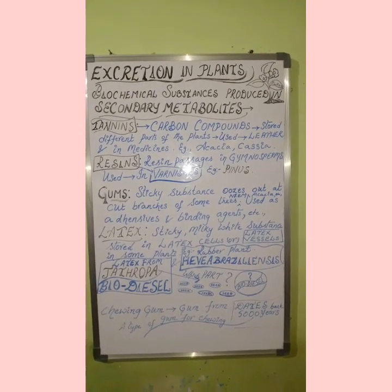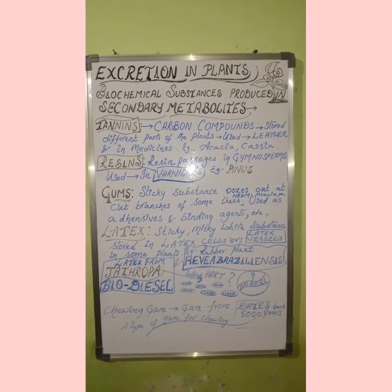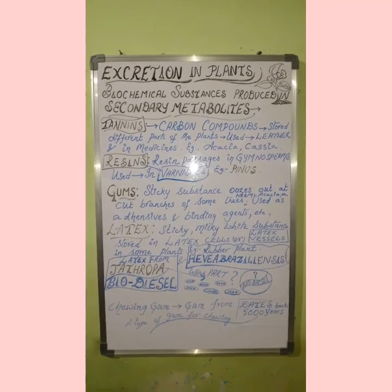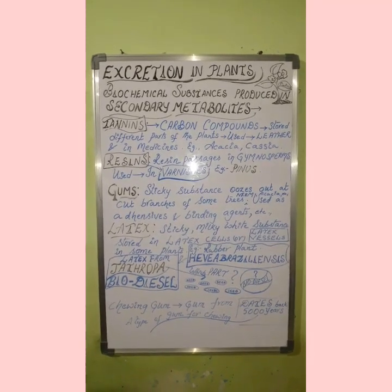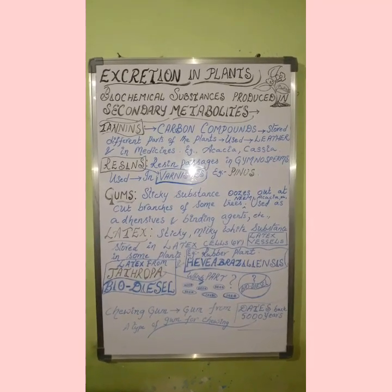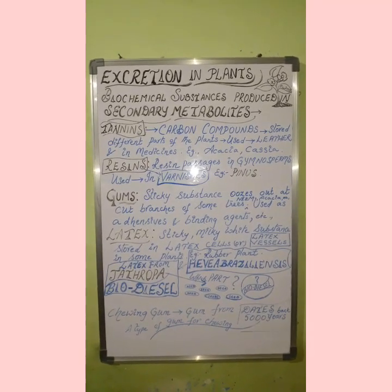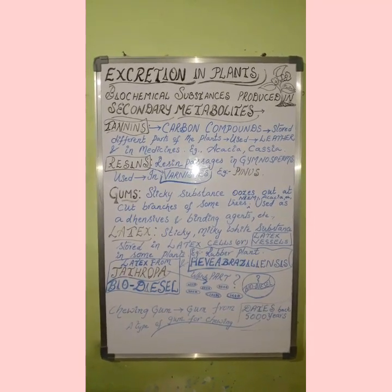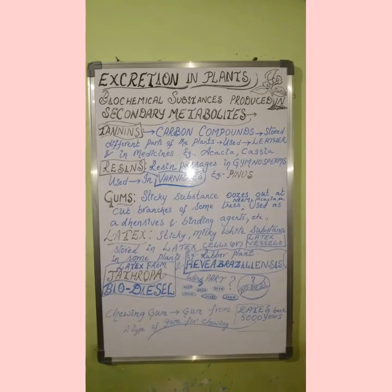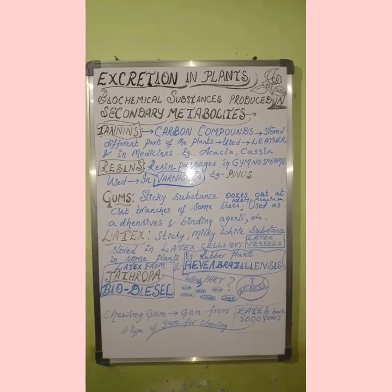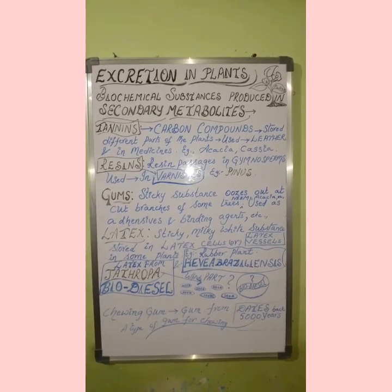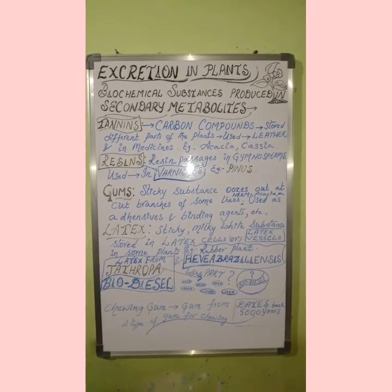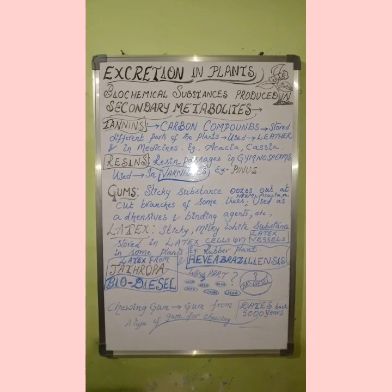Examples of secondary metabolites include alkaloids, tannins, resins, gums, and latex. Now let us see what other secondary metabolites are produced in plants and are useful for mankind.